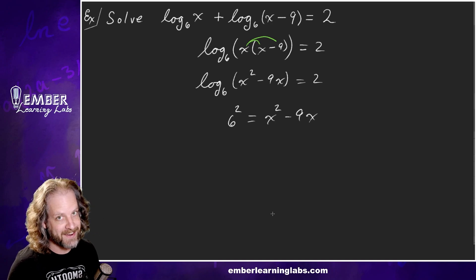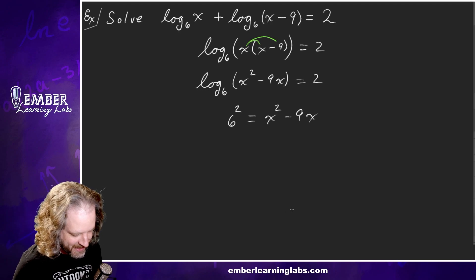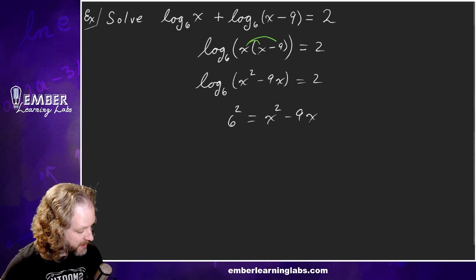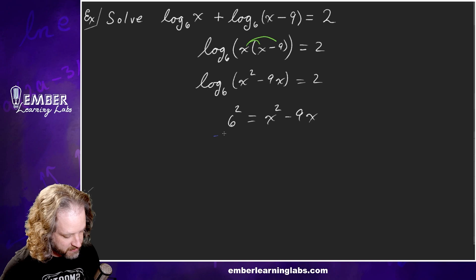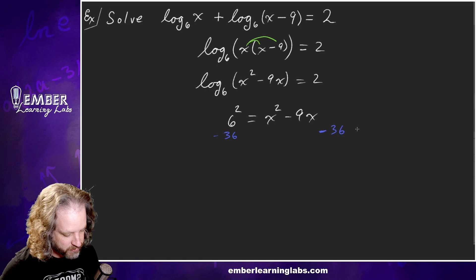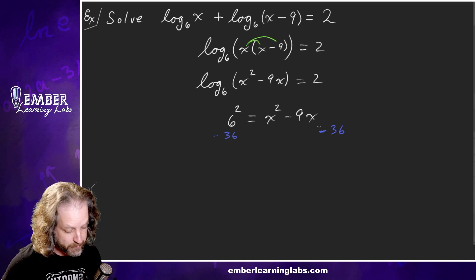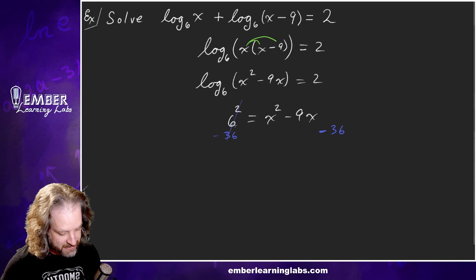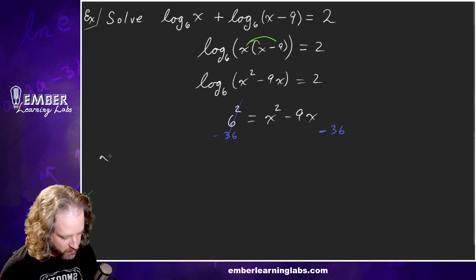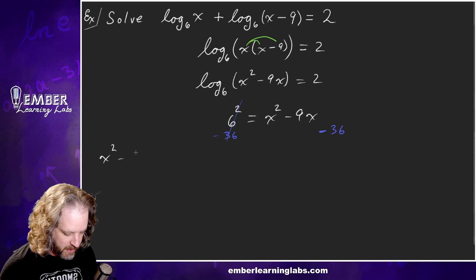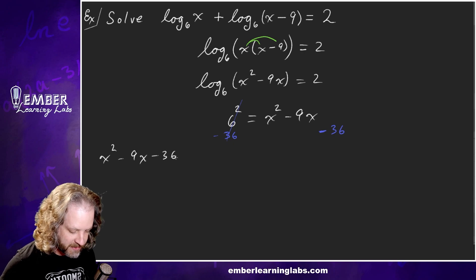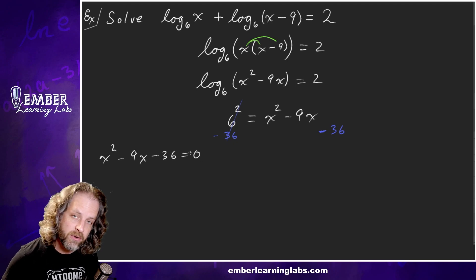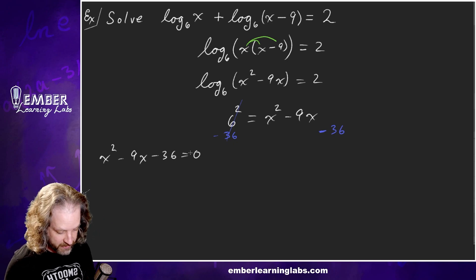Now we convert to exponential form: 6 to the 2 equals X squared minus 9X. So 36 equals X squared minus 9X. Subtracting 36 from both sides gives us X squared minus 9X minus 36 equals zero — it's looking like a quadratic.